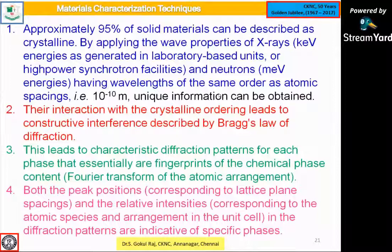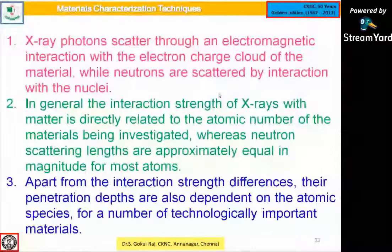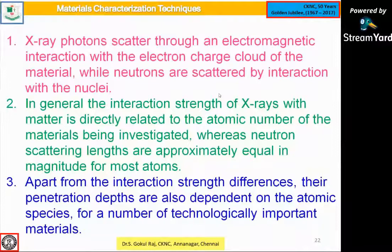Approximately 95% of the material in the world is crystalline. By applying X-ray diffraction in terms of kiloelectron volts, generated in the laboratory with high-powered synchrotron and neutron radiation, we can find structural analysis down to 10⁻¹⁰ meters. Their interaction with crystalline order through constructive interference is described by Bragg's law. This leads to characteristic diffraction patterns. From peak positions corresponding to lattice planes and relative intensities, we can identify whether a structure is cubic, monoclinic, orthorhombic, or rhombohedral.